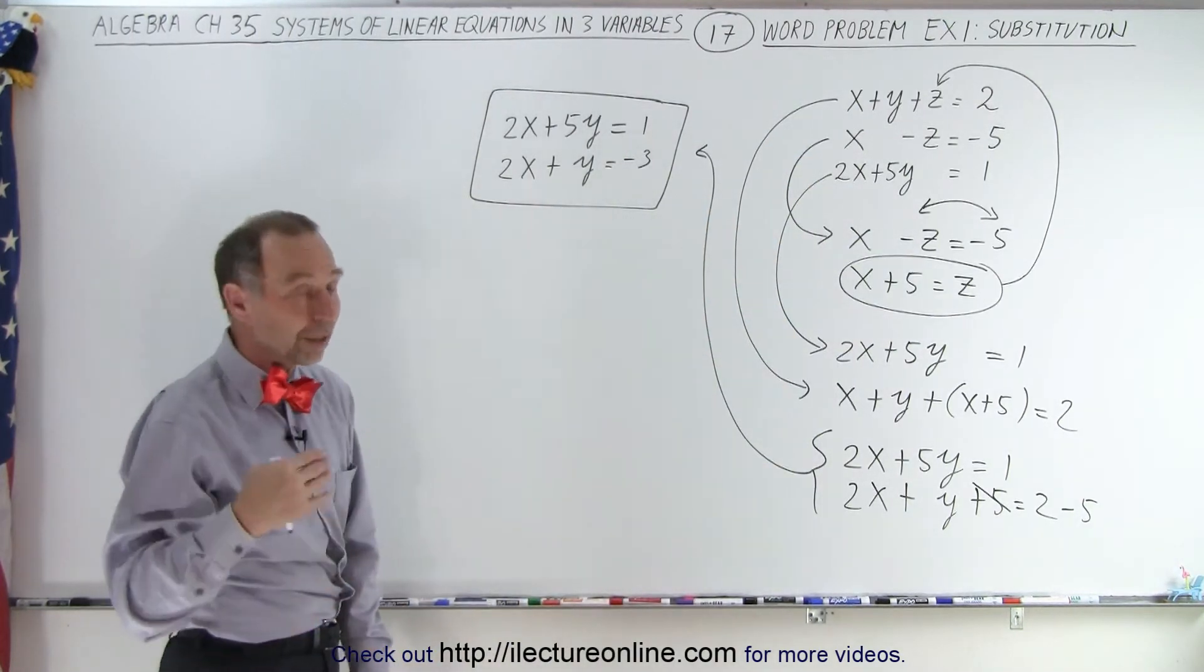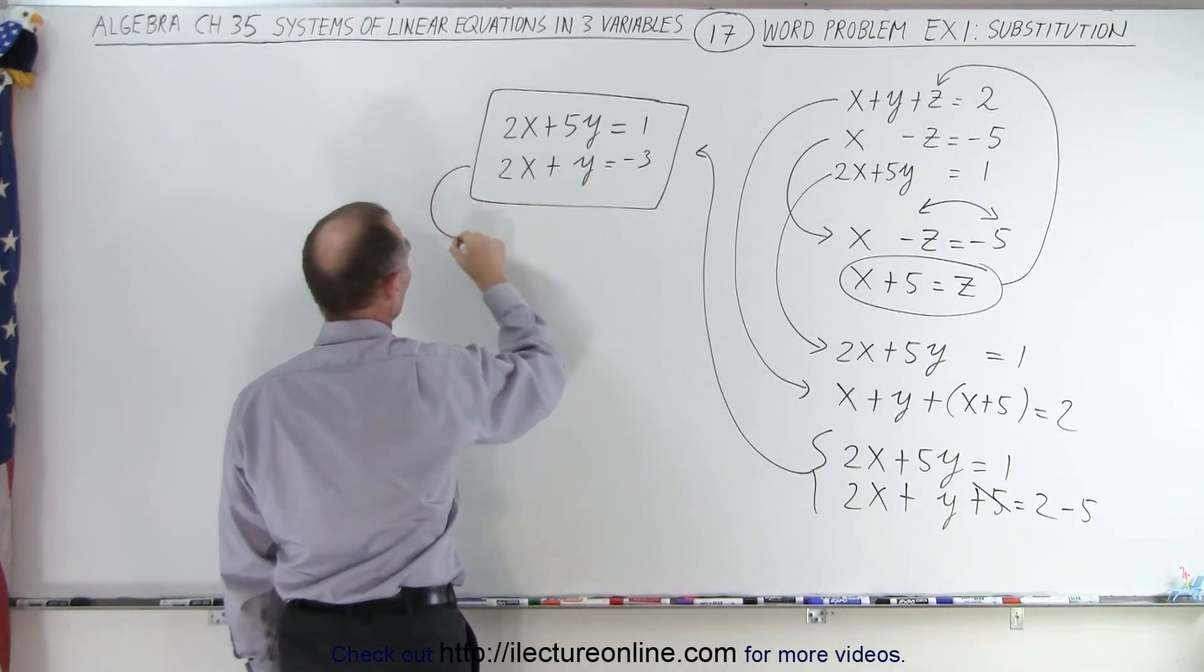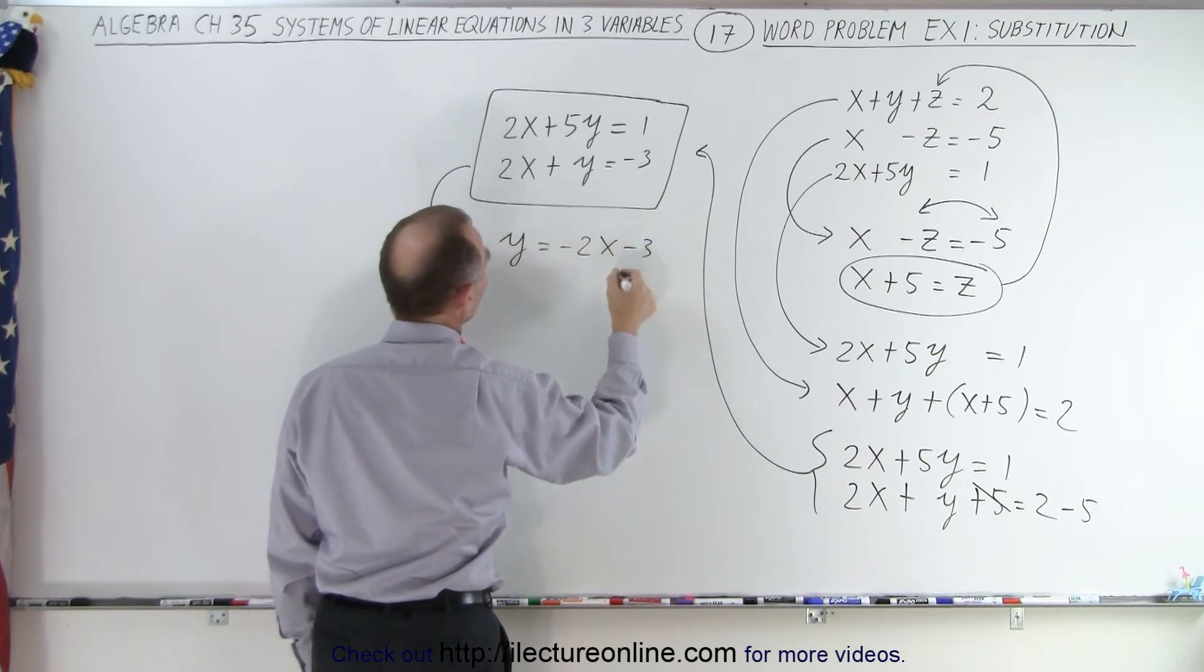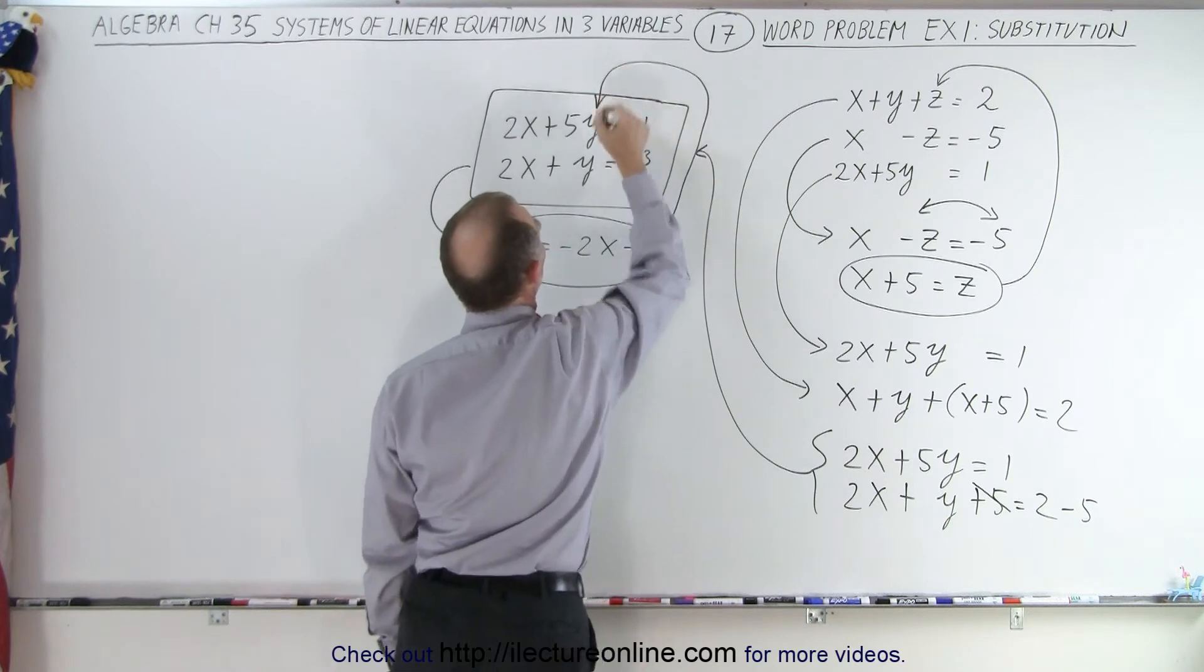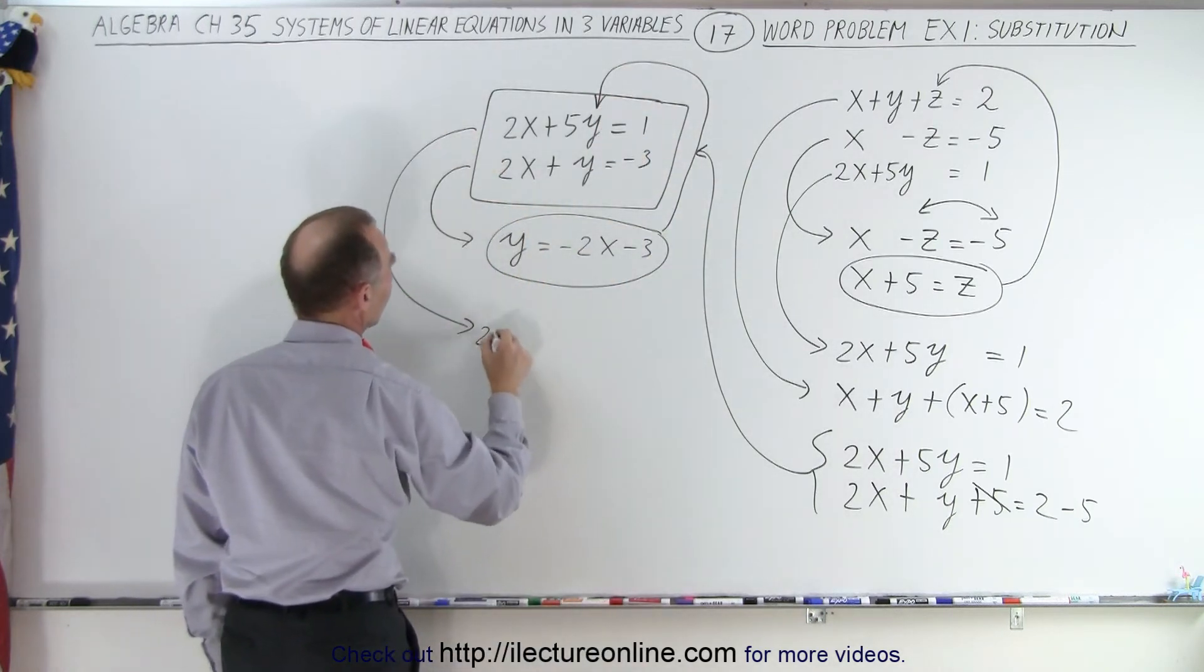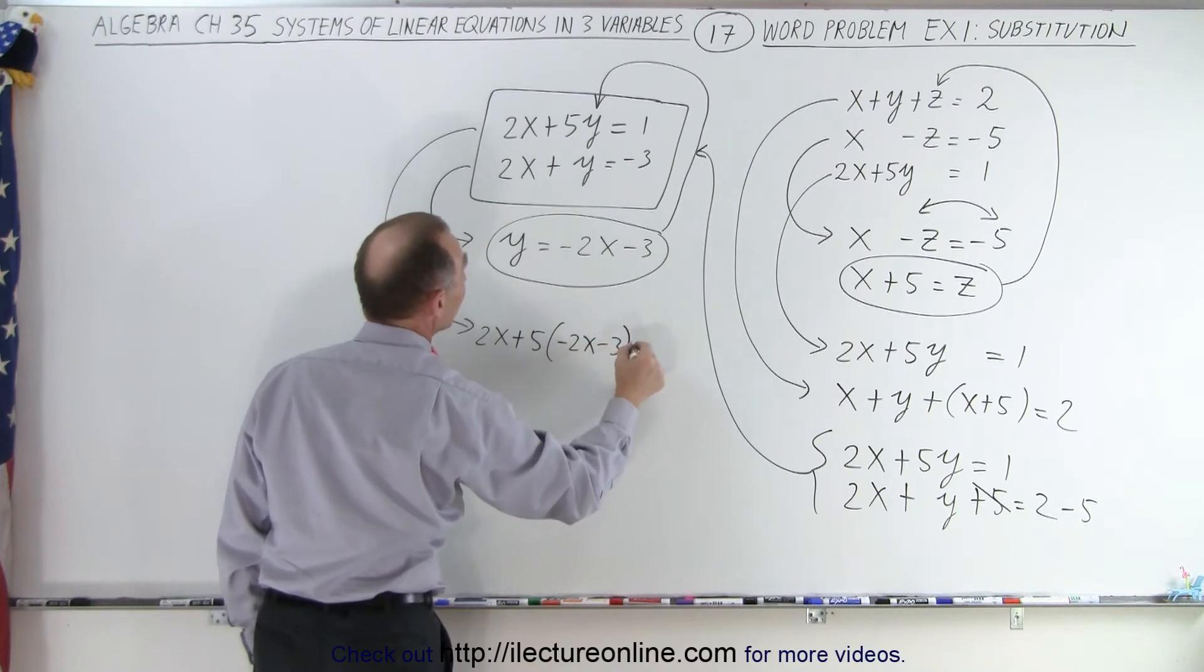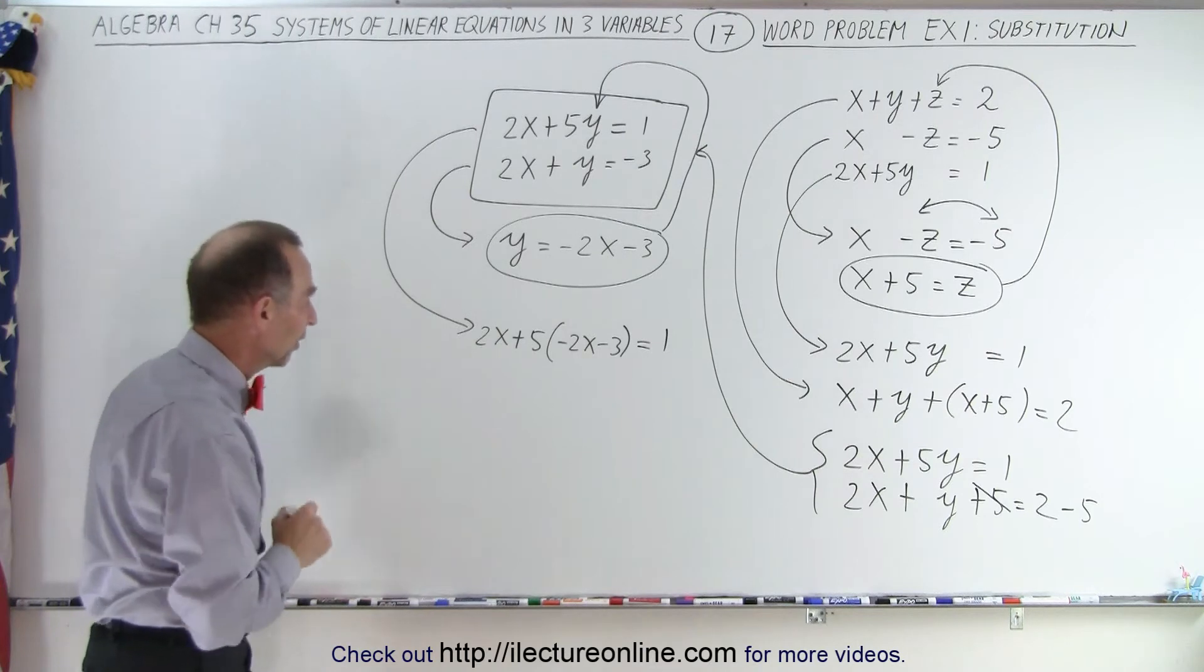Again, we're going to use the method of substitution again. We're going to take the second equation and solve it for y. So the second equation becomes y is equal to, the 2x goes to the right, becomes minus 2x minus 3. And then we're going to take this and substitute that in for y into the first equation. So then this equation comes down here, we get 2x plus 5 times y, but y can be replaced by minus 2x minus 3 equals 1. Now notice that equation only has one variable, the variable x.